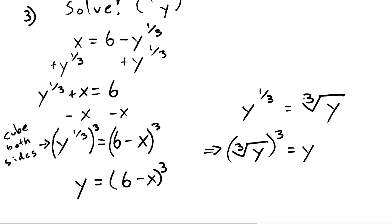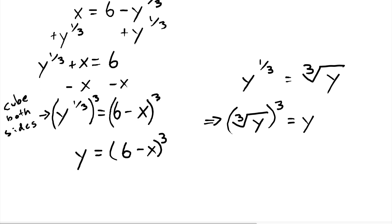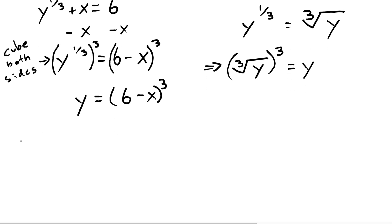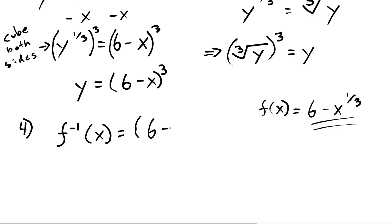So, we're done with step three. We wanted to solve for y and we've done that, which means we're now at step four, which is another pretty easy step, which is just replace y with f inverse of x, 6 minus x to the third power.